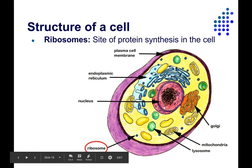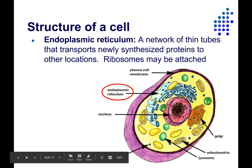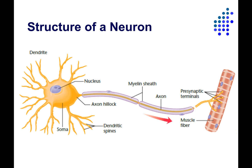Next up are the ribosomes, shown here in blue. These are the sites of protein synthesis — a protein complex that takes the instructions to make a protein from the nucleus and converts it into a protein. The endoplasmic reticulum acts like the UPS system of the cell, transporting proteins and other products from one part of the cell to another. And the Golgi apparatus is sort of like the packaging station where the boxes are packed up. Now let's talk about what's specific to neurons.